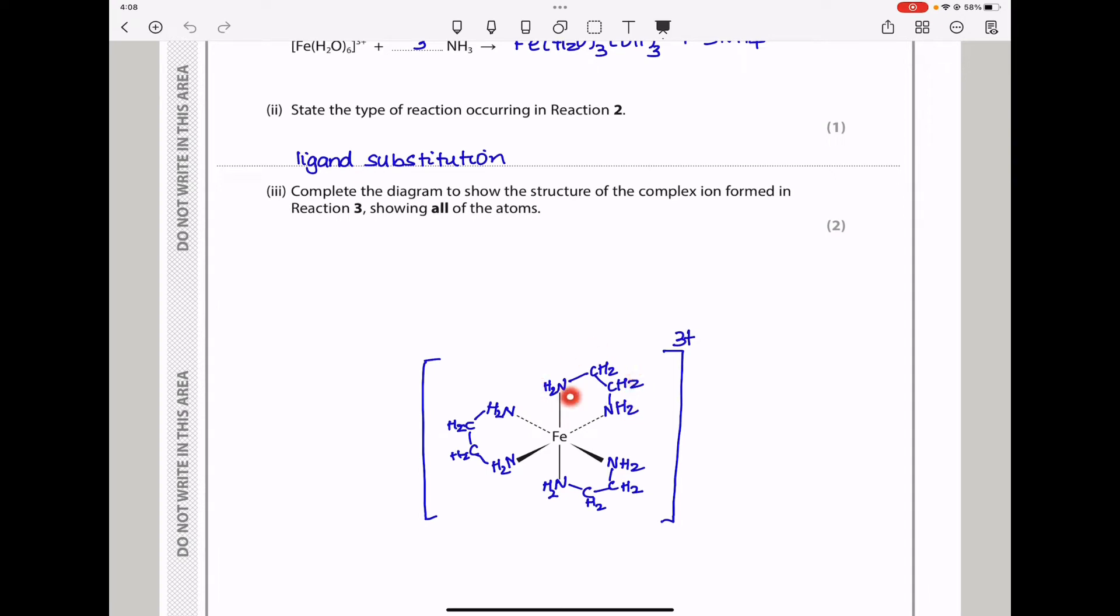Therefore, the structure should appear like this. We have 3 ligands, one, the second one, and the third one. And here, we had to put square brackets in order to put the 3-plus charge outside. Remember, ethylenediamine is not charged, it's neutral. So if iron has 3-plus charge, when the ligands attached to it are all neutral, it means the whole complex is going to have a charge of 3-plus.